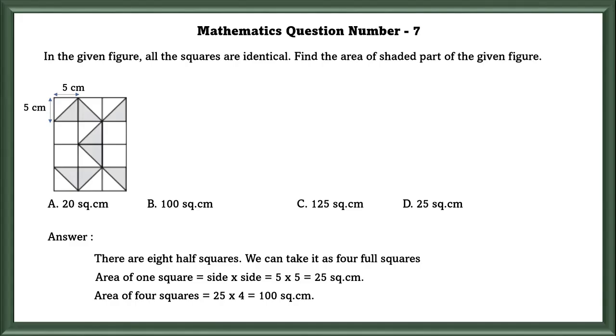There are 8 half squares. We can take it as 4 full squares. So the area of the 4 squares is equal to 25 into 4 which is equal to 100 square cm.